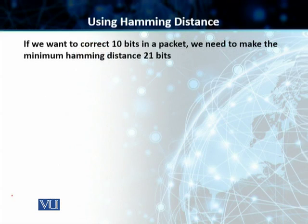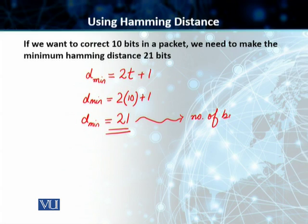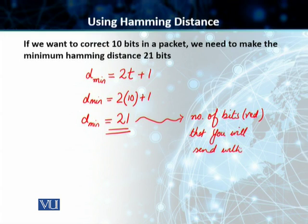In this particular case, we want to correct 10 bits in a packet. For the error correction, our minimum hamming distance is equal to 2 times t, where t is the number of correctable errors, plus 1. Your minimum hamming distance is equal to 2 times t plus 1. And so your minimum hamming distance comes out to be 21. This is the number of redundant bits that you will send with your data word.